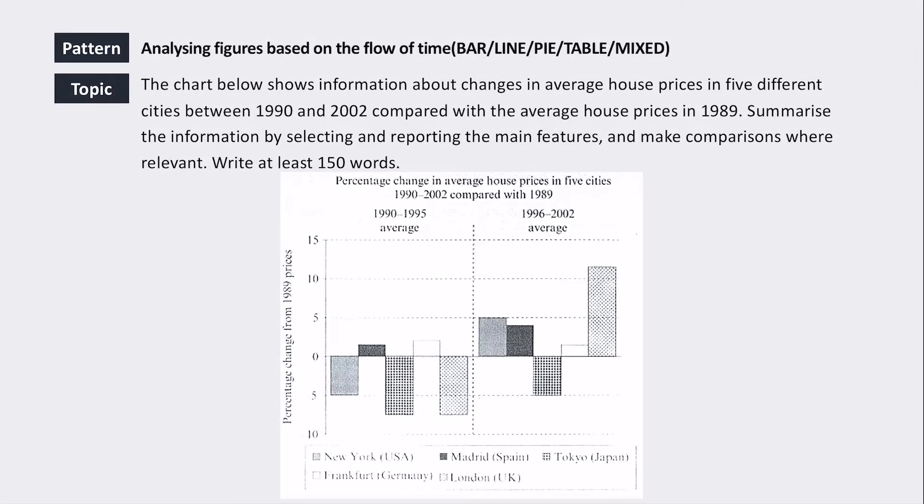Okay, so we're going to look at an IELTS Task 1 topic, and it's going to be analyzing a bar chart. So we've got the bar chart here. Let's take a look at the topic. The chart below shows information about changes in average house prices in five different cities between 1990 and 2002, compared with the average house prices in 1989. Summarize the information by selecting and reporting the main features and make comparisons where relevant. This is something students often forget to do when they're writing their Task 1, is to make sure that you're using lots of comparison sentences. This is a really good chance for you to show different types of grammar, different types of sentence structures to increase your grammar score.